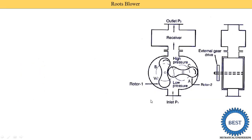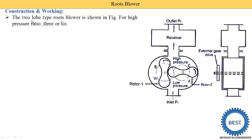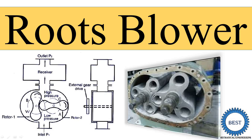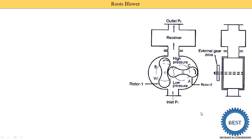This is the image of a roots blower — this is the front view and this is the side view. The two-lob type rotor blower is shown in this figure. This one is the first lob and this is the second lob. For a high pressure ratio, three or four lobs may be used. Three lobs means the shape is changed, as seen in this image. For four lobs, one more is added, but the number of shafts remains two.